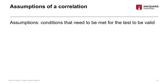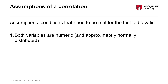Moving on to assumptions of a correlation — assumptions are conditions that must be met for the test to be valid. The first assumption is that both variables are numeric and approximately normally distributed: relatively symmetric, with a peak in the middle, even tails, not too peaked or flat, a single peak, and some variability. Approximately normally distributed means it doesn't have to be perfect, just approximate.